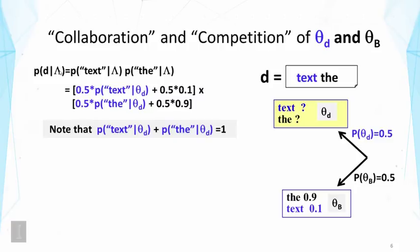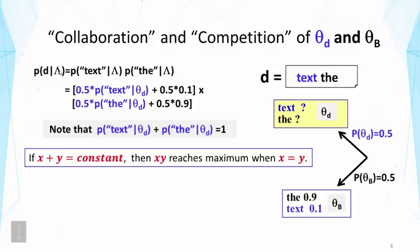So again, looking at this objective function, and we have a constraint on the two probabilities. Now, if you look at the formula intuitively, you might feel that you want to set the probability of text to be somewhat larger than the. And this intuition can be well supported by a mathematical fact, which is when the sum of two variables is a constant, then the product of them is maximum when they are equal. And this is a fact that we know from algebra.